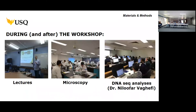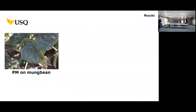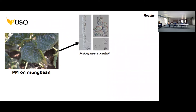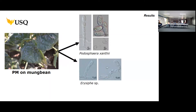During the workshop we did extensive microscopy of specimens collected by participants across the country, as well as old herbarium specimens, and we conducted sequence analysis. During the workshop we discovered a new powdery mildew species on a legume crop widely grown in southern Queensland. The powdery mildew on this crop used to be considered caused by a single species, but during the microscopy session it quickly became apparent that we had another species there, which had never been taken into consideration.